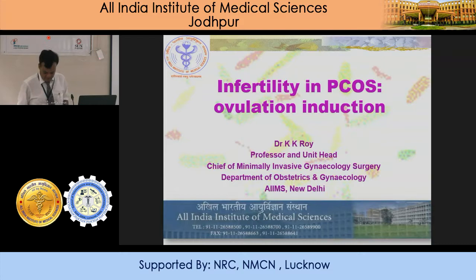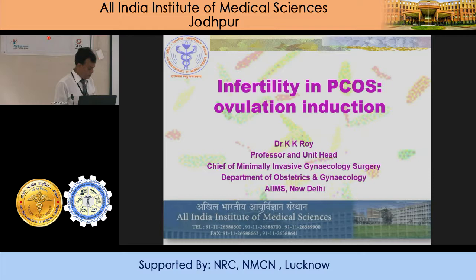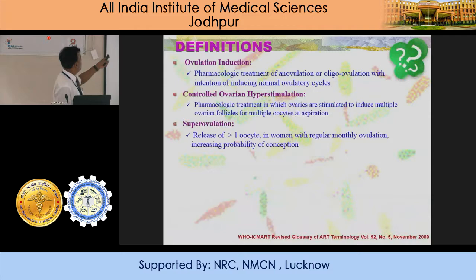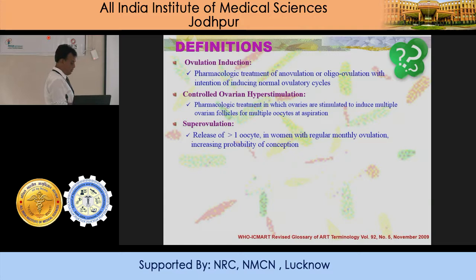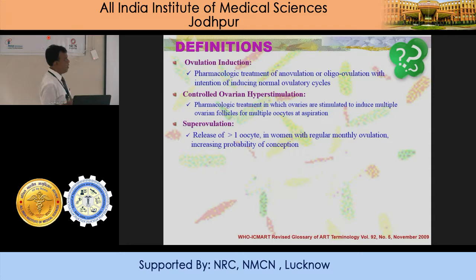It's a very important topic and people are confused — even after so many years, we are not able to think clearly about what should be started in which group of patients. For the students here, we must know the nomenclature, which can sometimes be misleading. Ovulation induction is the pharmacological treatment of anovulation or oligo-ovulation with the intention to induce a normal ovarian cycle — that is a normal ovulation cycle.